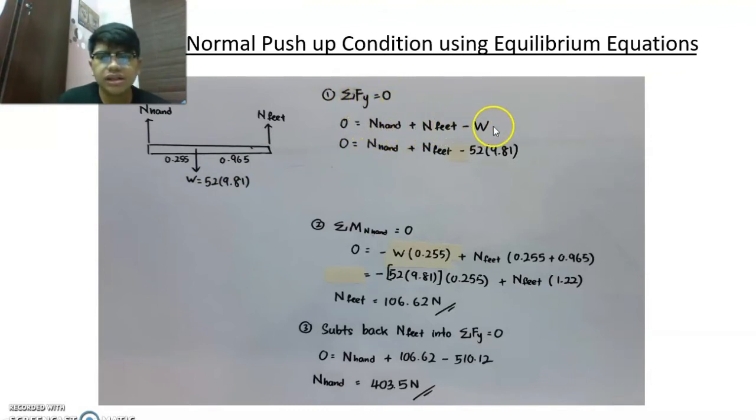We use moment of hand equals zero. So negative W multiplied by 0.255 plus Nfeet multiplied by 0.255 plus 0.965. So Nfeet is 106.62 Newton. The third step is substitute and fit into ΣFy = 0. And Nhand we get equals 403.5 N.